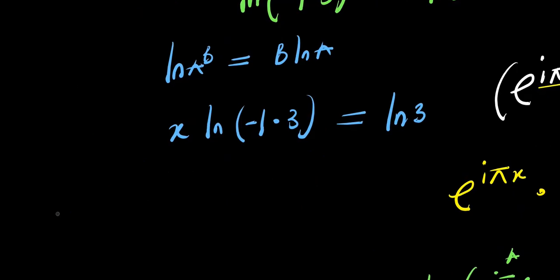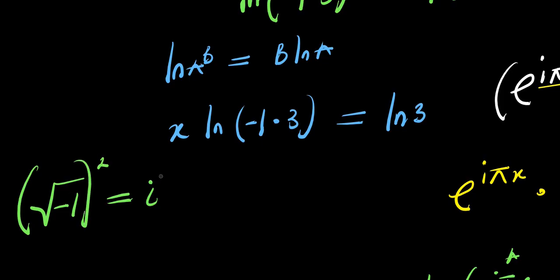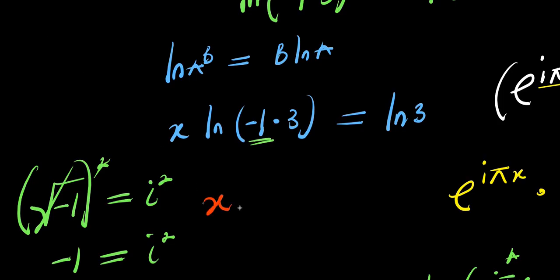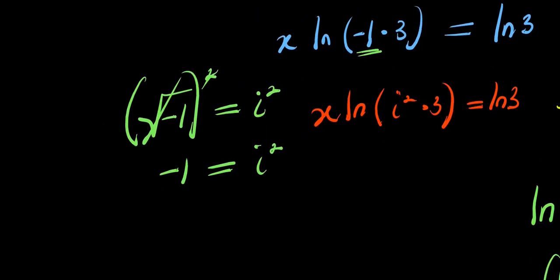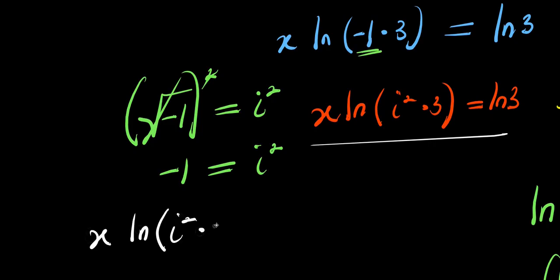Now, remember that the square root of negative 1 equals i, so squaring both sides gives negative 1 equals i squared. So I replace negative 1 with i squared in the expression, giving x times natural log of i squared times 3 equals natural log of 3.